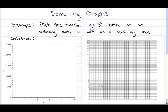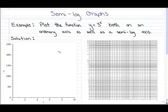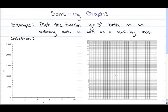Now also notice that there's no zero on a logarithmic scale. I want you to now pause the video and try to plot this function 3 to the x both on the regular scale as well as the semi-log axis. The easiest way to do this is to probably make a table of values for both x and y — plot one on the original axis and the other on the semi-log axis and see what you obtain.